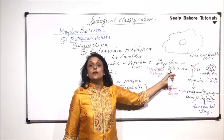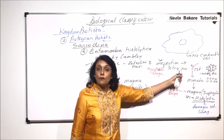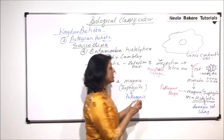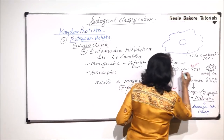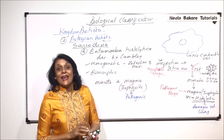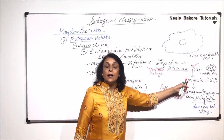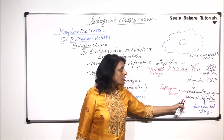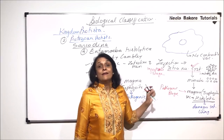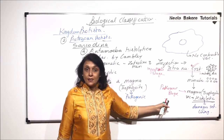The infection reaches us through contaminated food and water in the form of a tetranucleate cyst — this is very important to remember. From one cyst, eight minutas are released, which then change into the trophozoite or magma stage, which is the pathogenic, disease-causing stage.